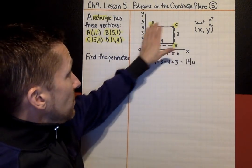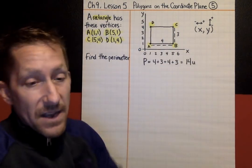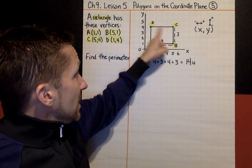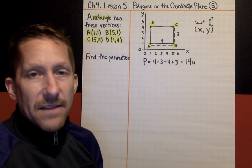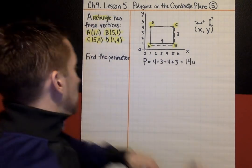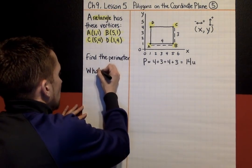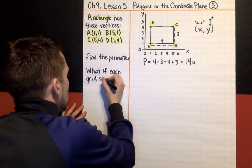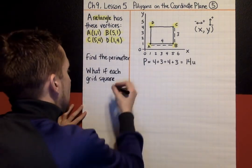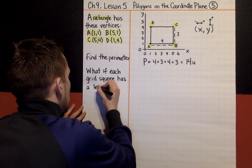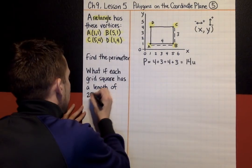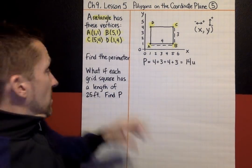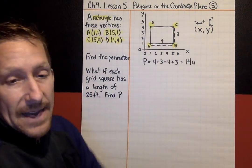Okay, next. What if, I'm going to look at this same rectangle, 4 by 3 rectangle, and in this example, what if we changed the scale, or each side, each square is not 1 unit, but what if each grid square had a length of 25 feet? So, I'm going to write that down. What if each grid square has a length of 25 feet? And then I'm going to say, find the perimeter.